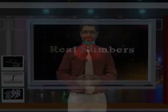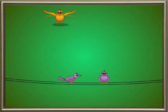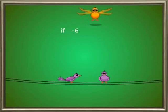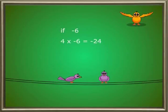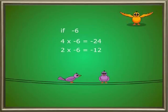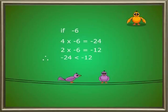Let us understand how this is invalid by actually using a negative number for z. When we take a negative number like minus 6, then 4 × (−6) = −24 and 2 × (−6) = −12, and −24 is less than −12. As you can see, the above statement only holds true if we multiply both sides with a positive number.